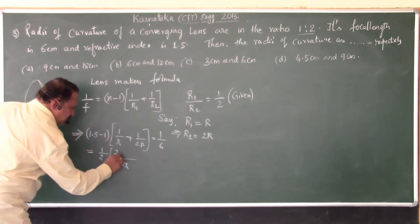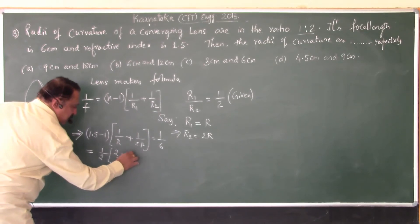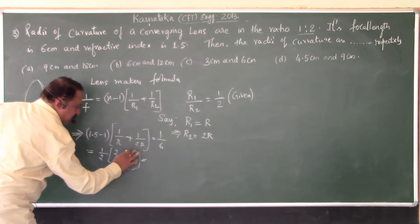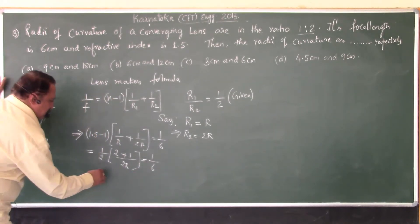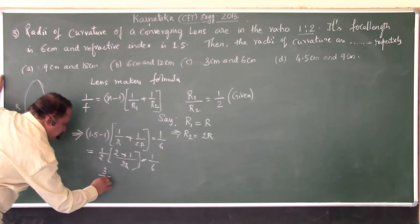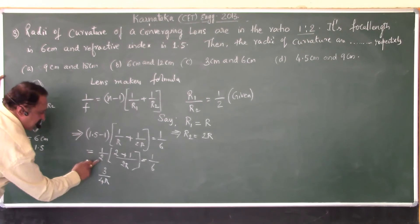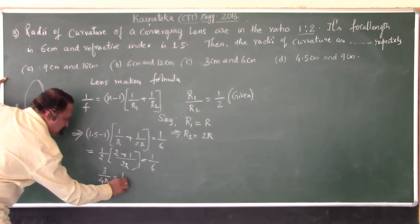R and R cancel. 2 plus 1, so 2R by 2R is 1. This is 3 by 4R. 2 plus 1 is 3, 2 into 2R is 4R equals 1 by 6.